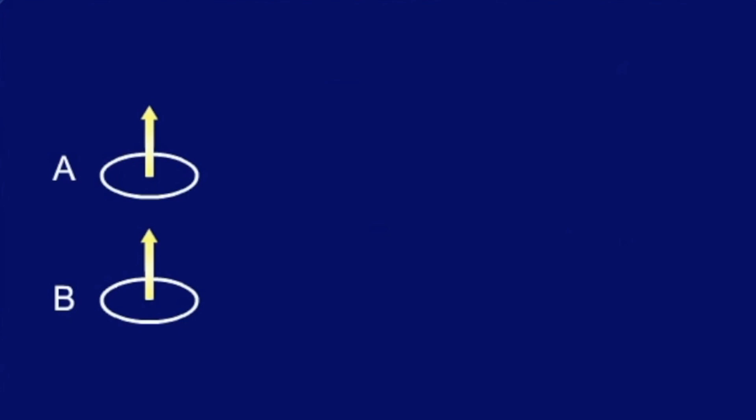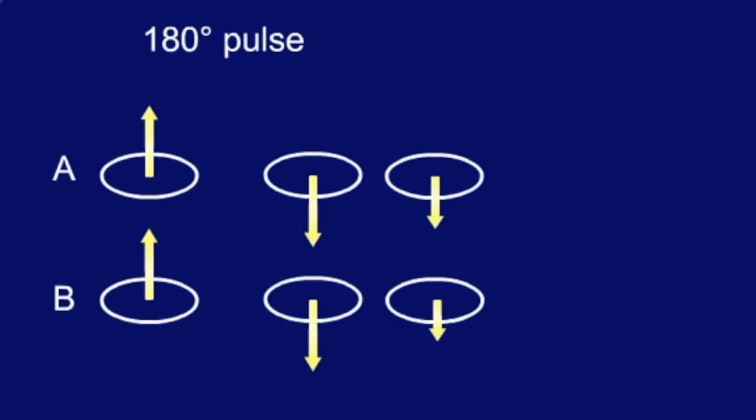Before the 180-degree pulse there is no difference. After the 180-degree pulse we can see that tissue B goes back to its original longitudinal magnetization faster, thus has the shorter T1.